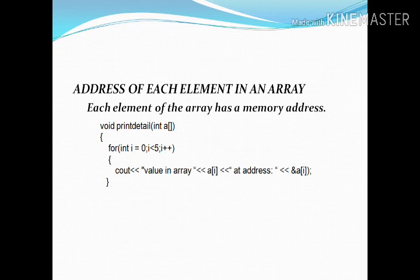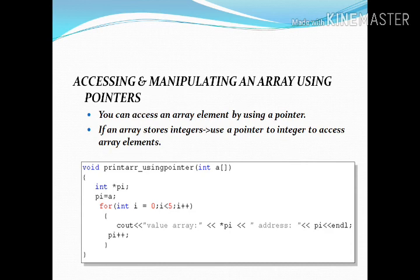Each element of an array has a memory address. For example: void printData(int array a[]); for j = 0 to j < 5, j++ — using cout (if C++) or printf (if C). You can also access an array element using a pointer. If the array stores integers, then use an integer pointer to access the array element — void pointer using pointer with the printf code.